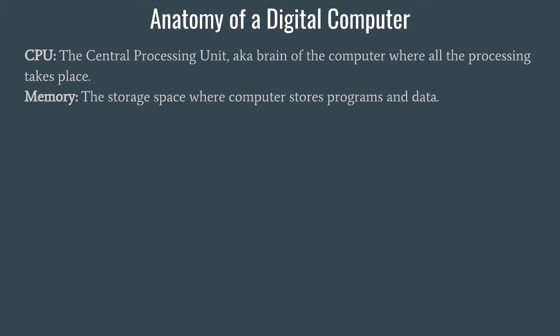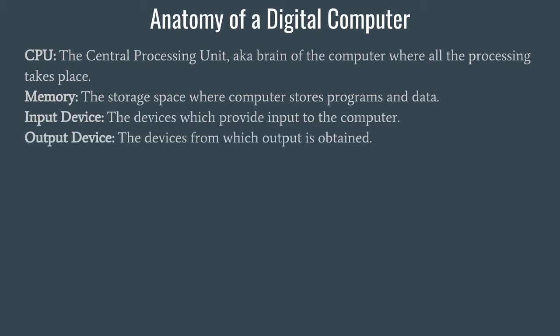Memory is the second most important thing after the CPU. If a computer does not have sufficient memory, no matter how capable it is, it will not be able to perform operations — because the instructions the computer operates on must be stored somewhere. Memory is the storage space where the computer stores programs and data, including results. Memory is of two types: primary memory and secondary memory, and we also have registers and cache.